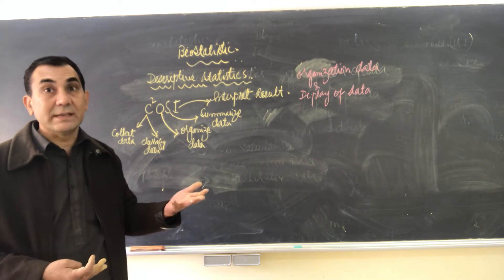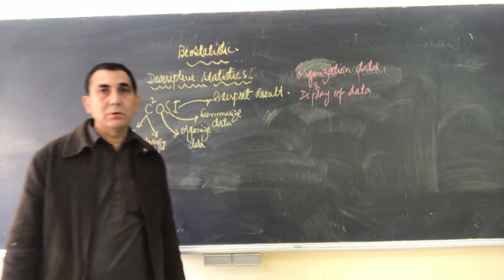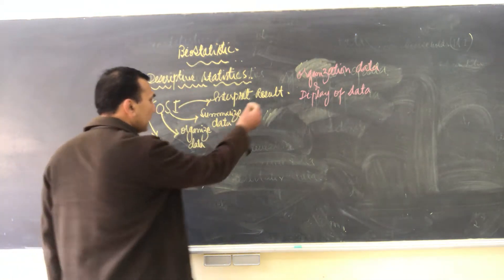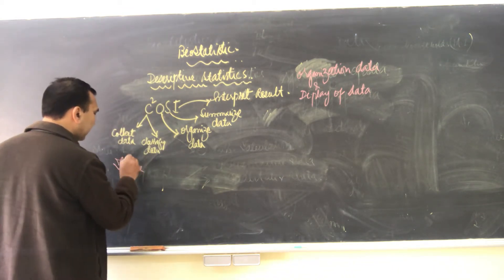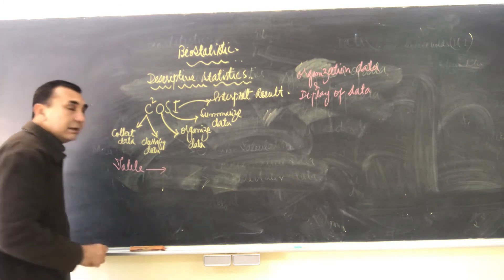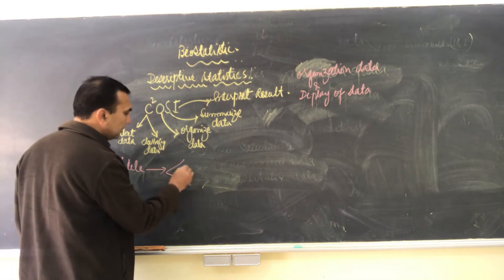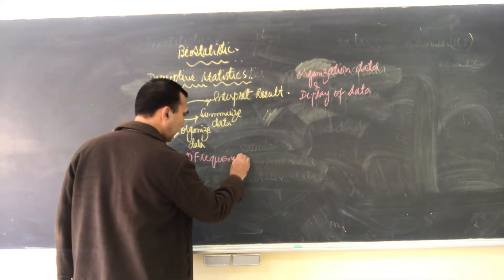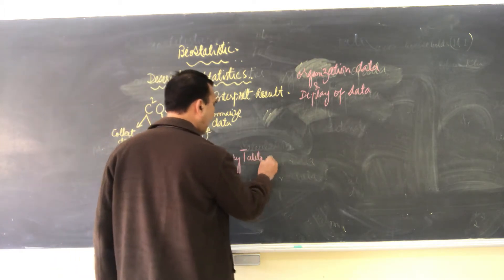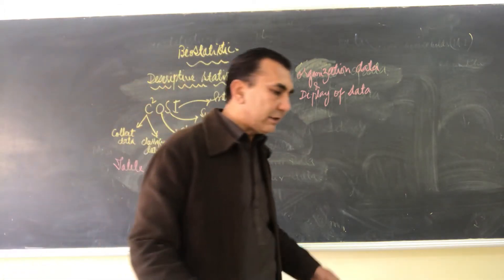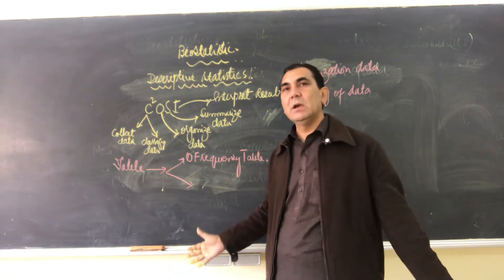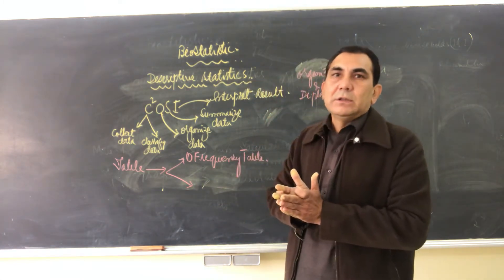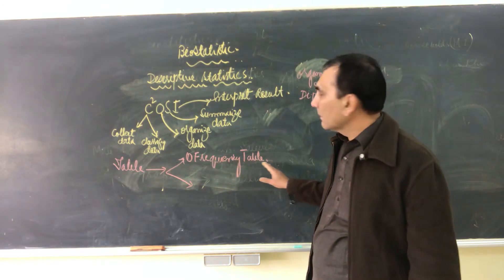In this two-day lecture, we will learn about the organization and display of data. For organizing data, we will use tables. There are two types of tables. Number one is the frequency table, in which we collect huge data or information and summarize it in the form of a frequency table.